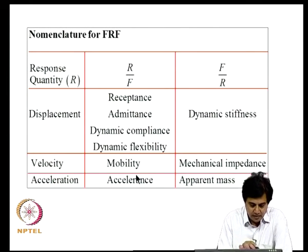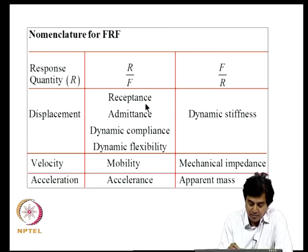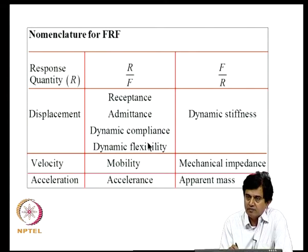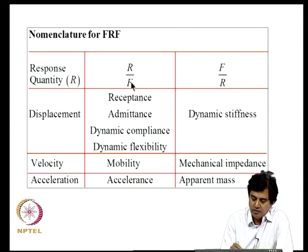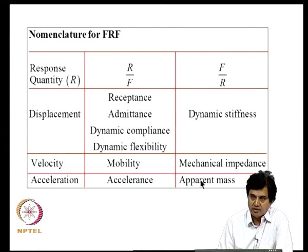In the existing literature, receptance is also described by the terms admittance, dynamic compliance, or dynamic flexibility — these four terms are synonymous. The terminologies are tabulated: receptance/admittance/dynamic compliance/dynamic flexibility are displacement per unit force; mobility and its reciprocal mechanical impedance relate to velocity; accelerance and apparent mass relate to acceleration. These cover displacement, velocity, and acceleration response per unit force and the corresponding force-per-response quantities.